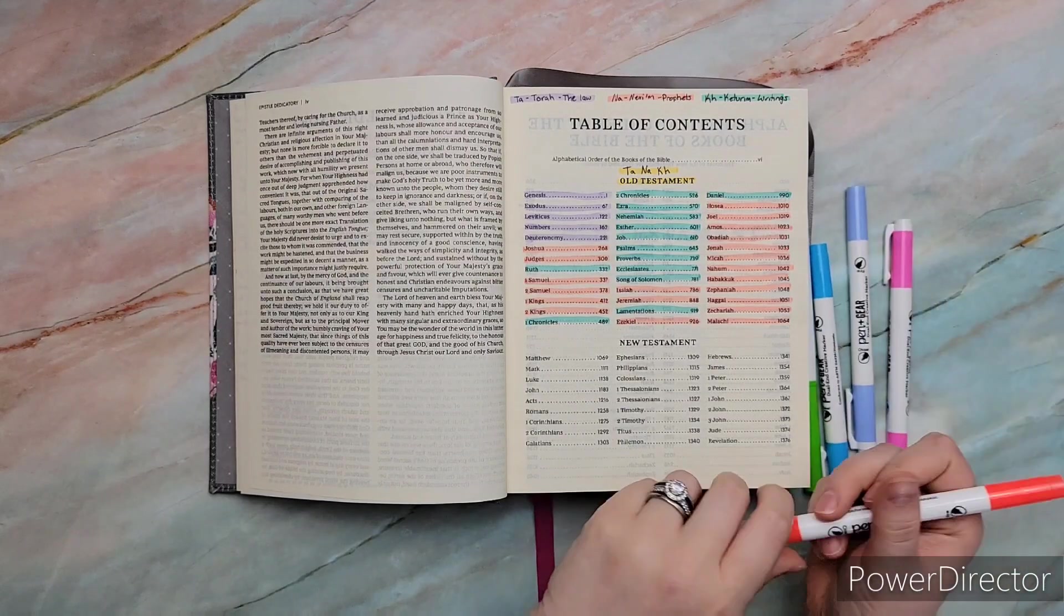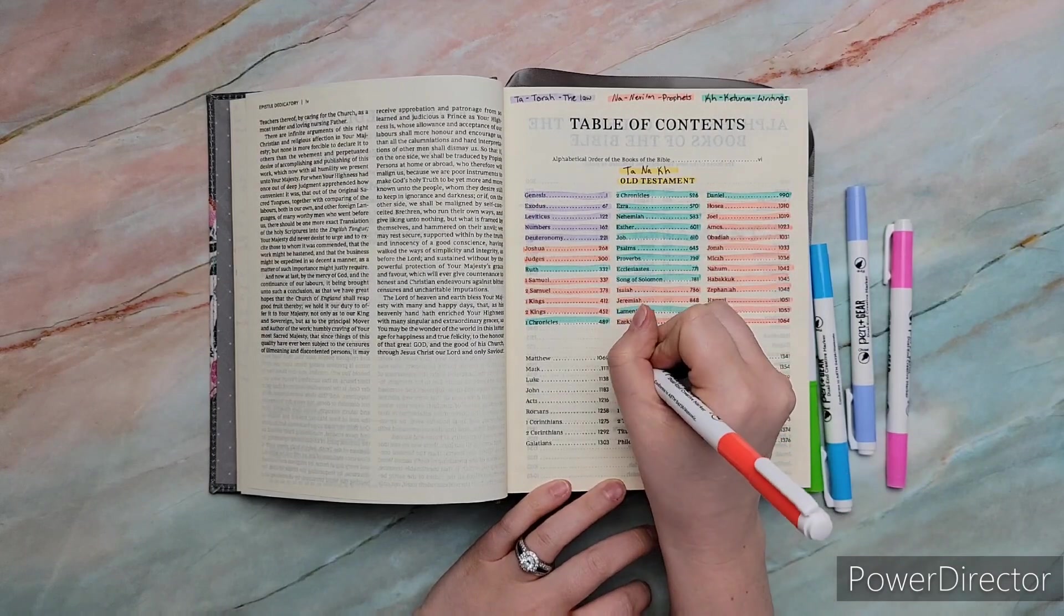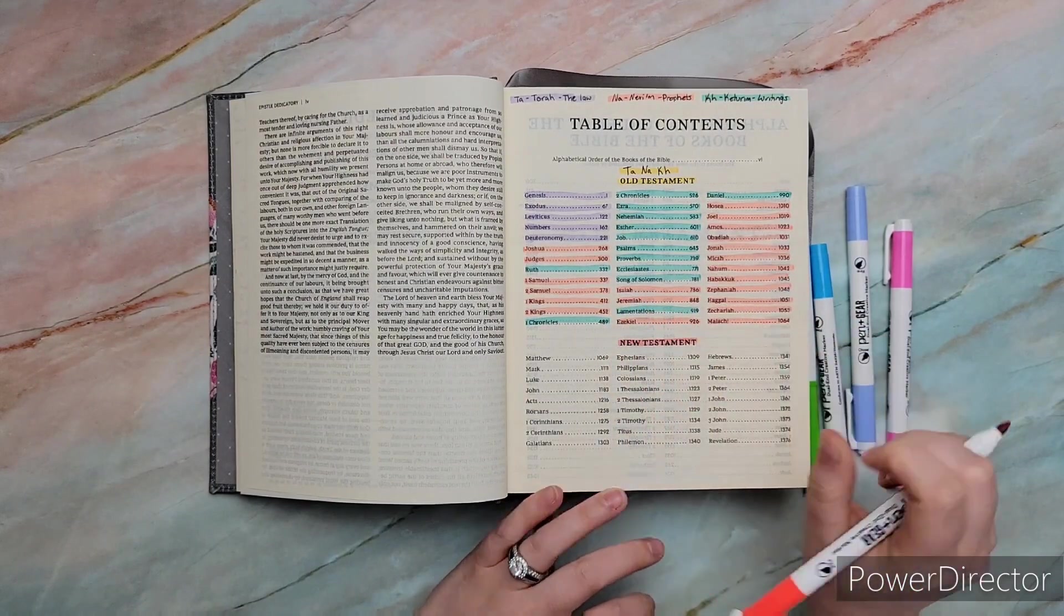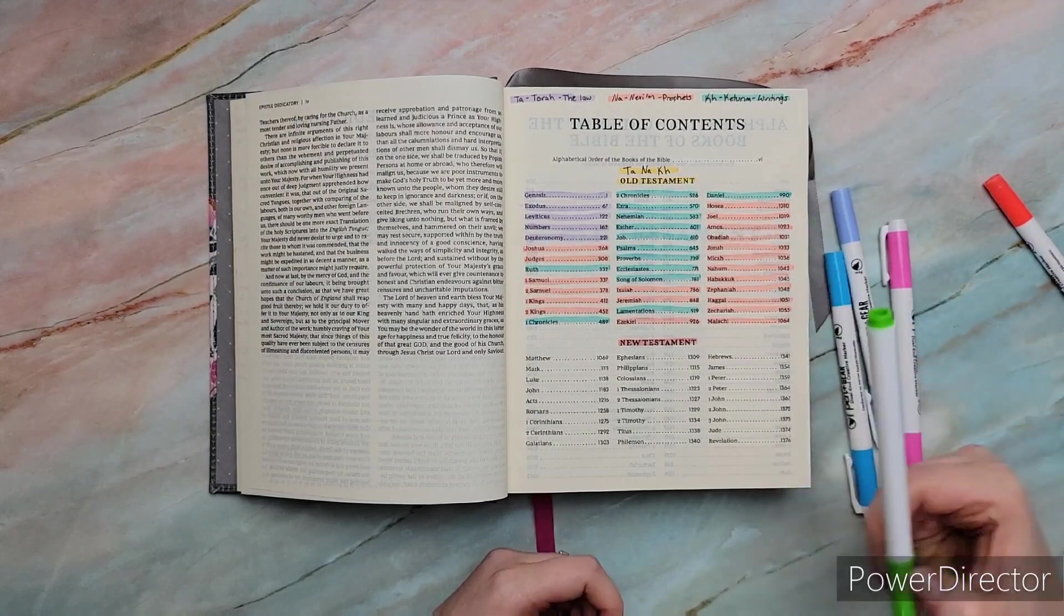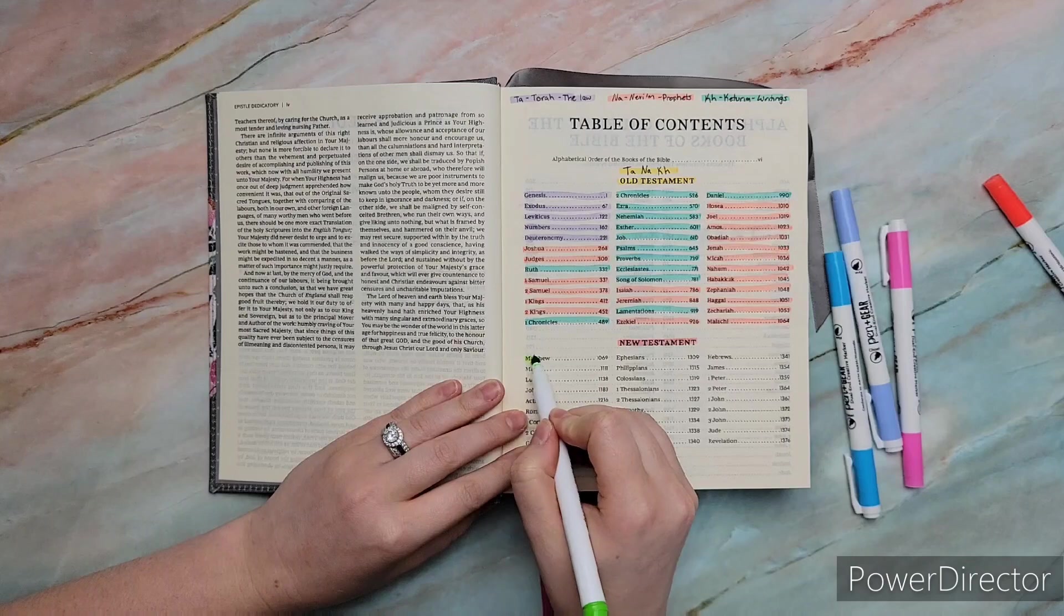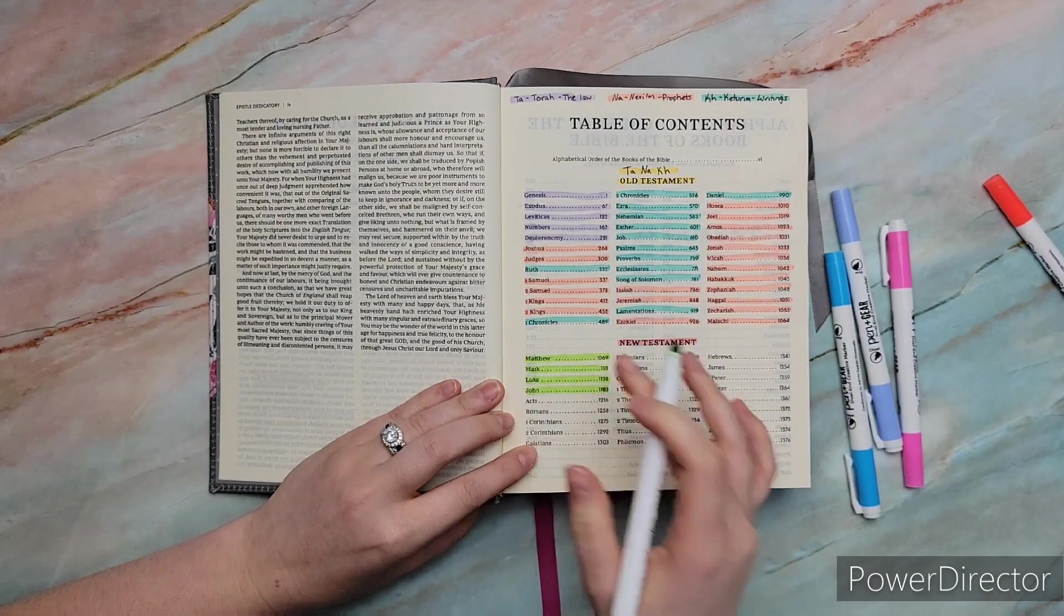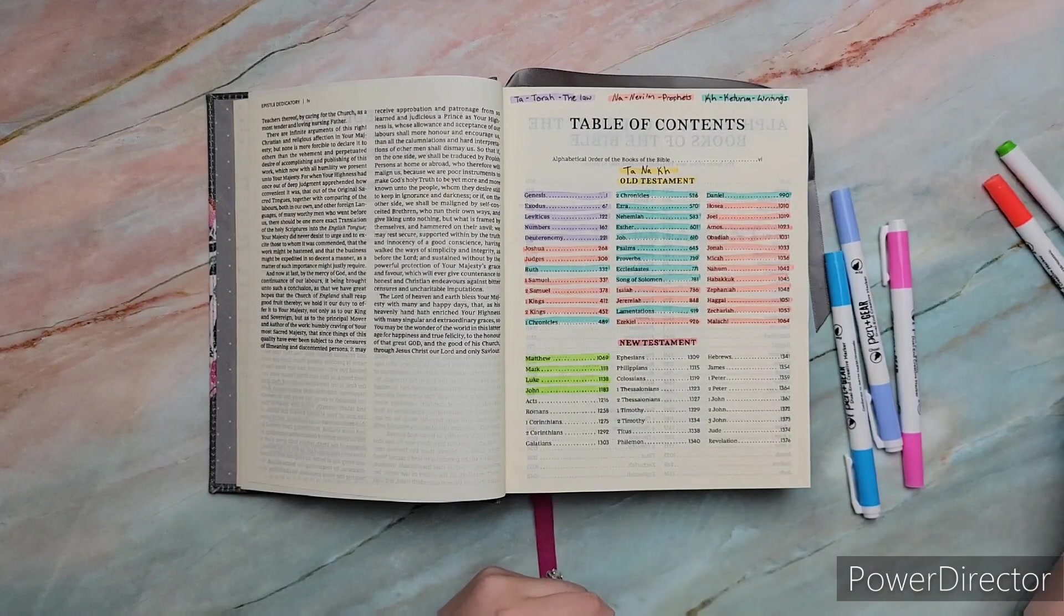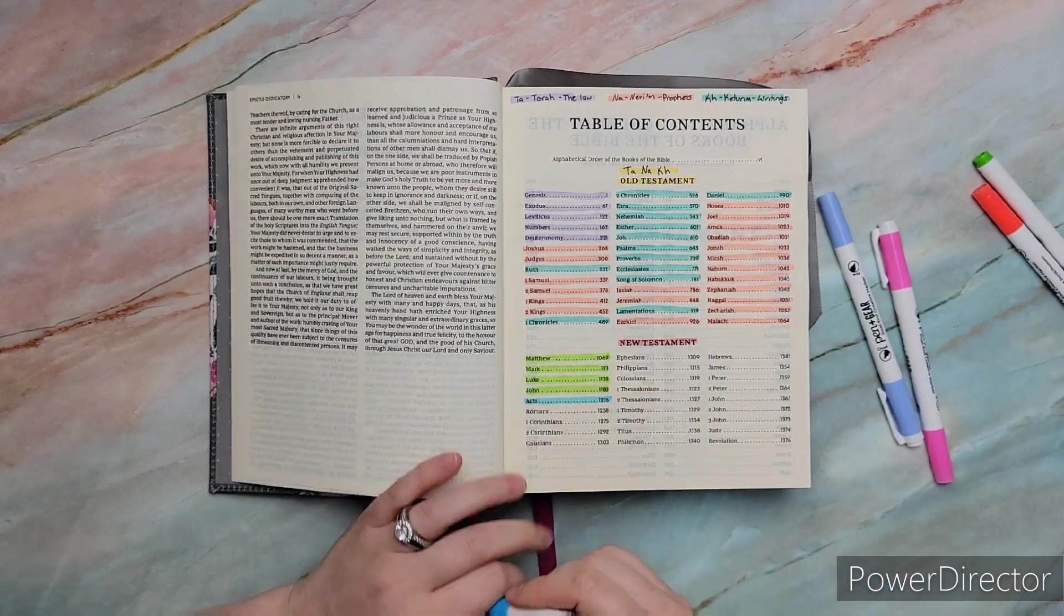The New Testament is the second major division of the Christian Bible. It is the portion that is canonical or authoritative, only to Christianity. Christians see the New Testament as the fulfillment of the promise of the Old Testament. It relates and interprets the New Covenant, represented in the life and death of Jesus between God and the followers of Christ, who is the promised Messiah.